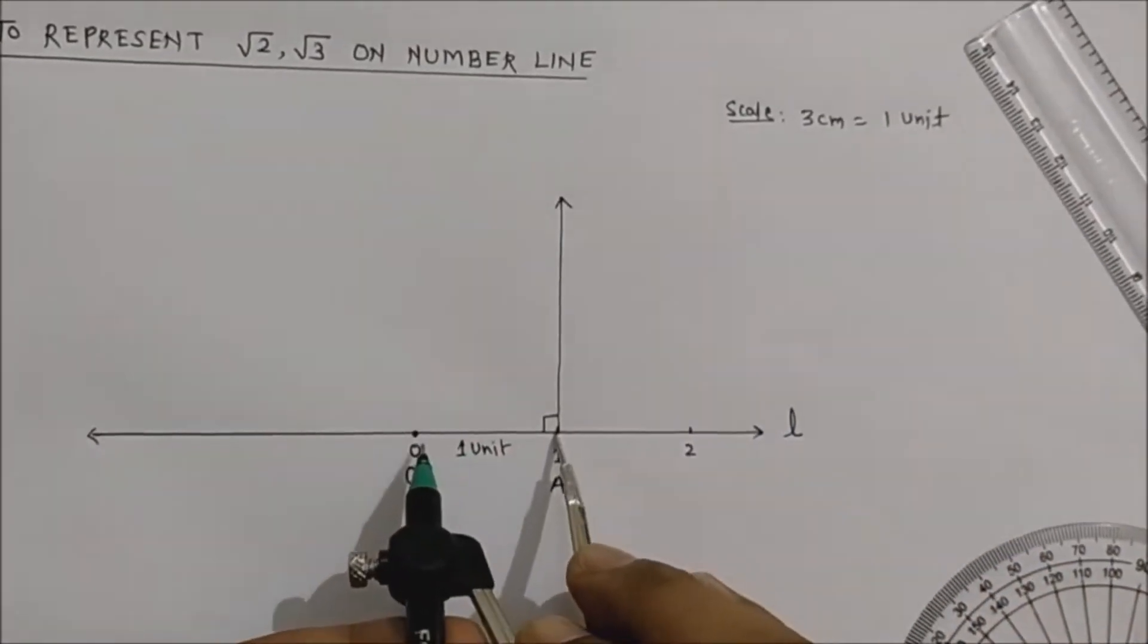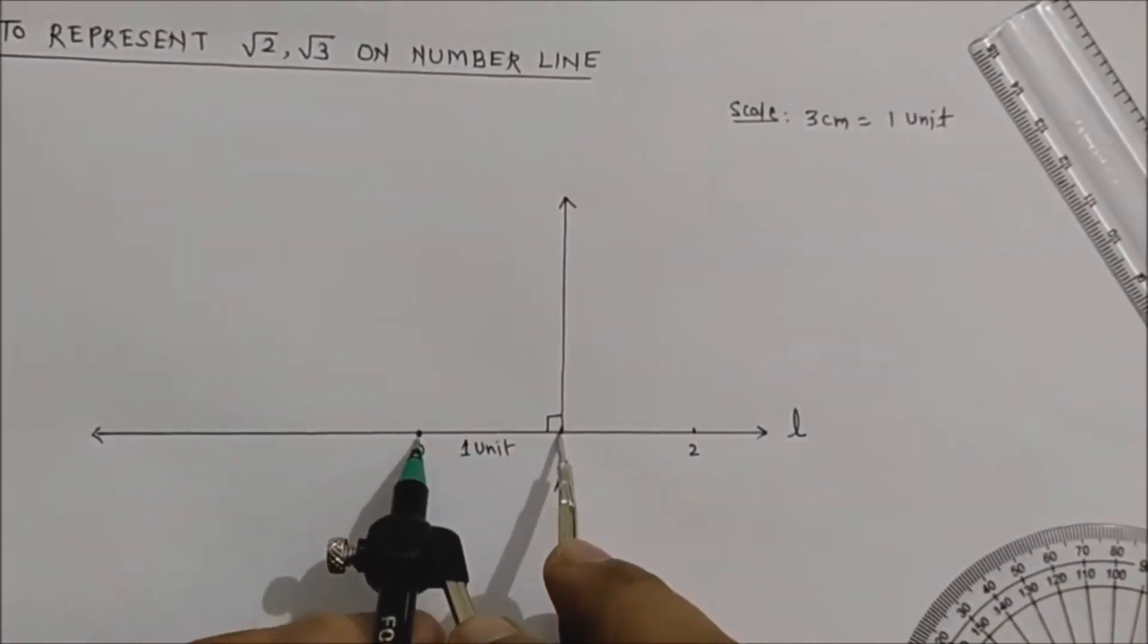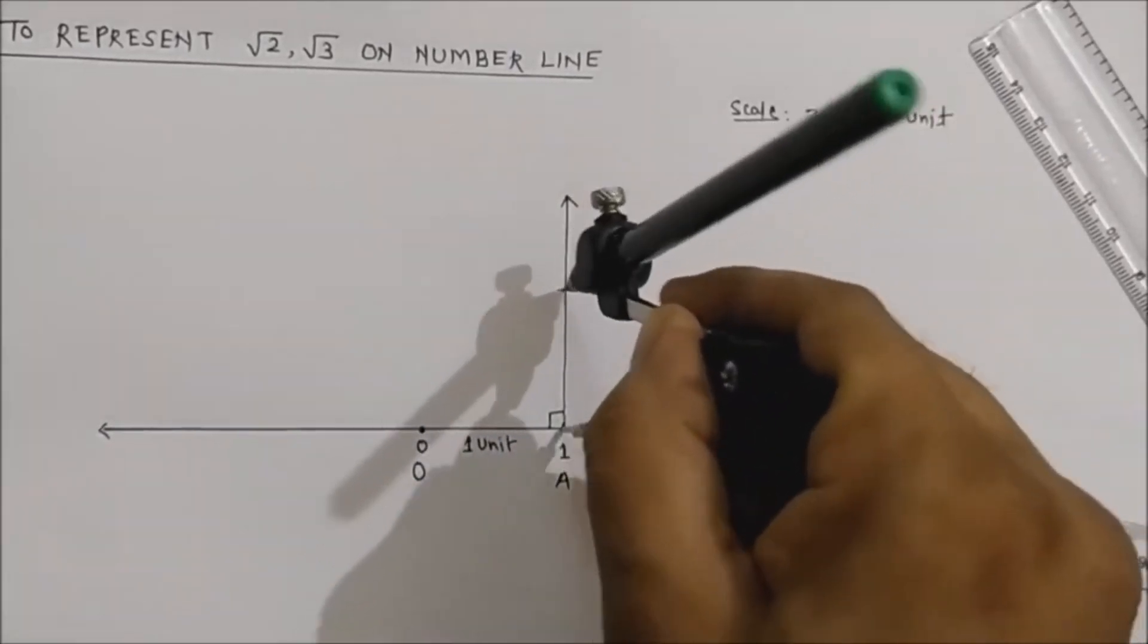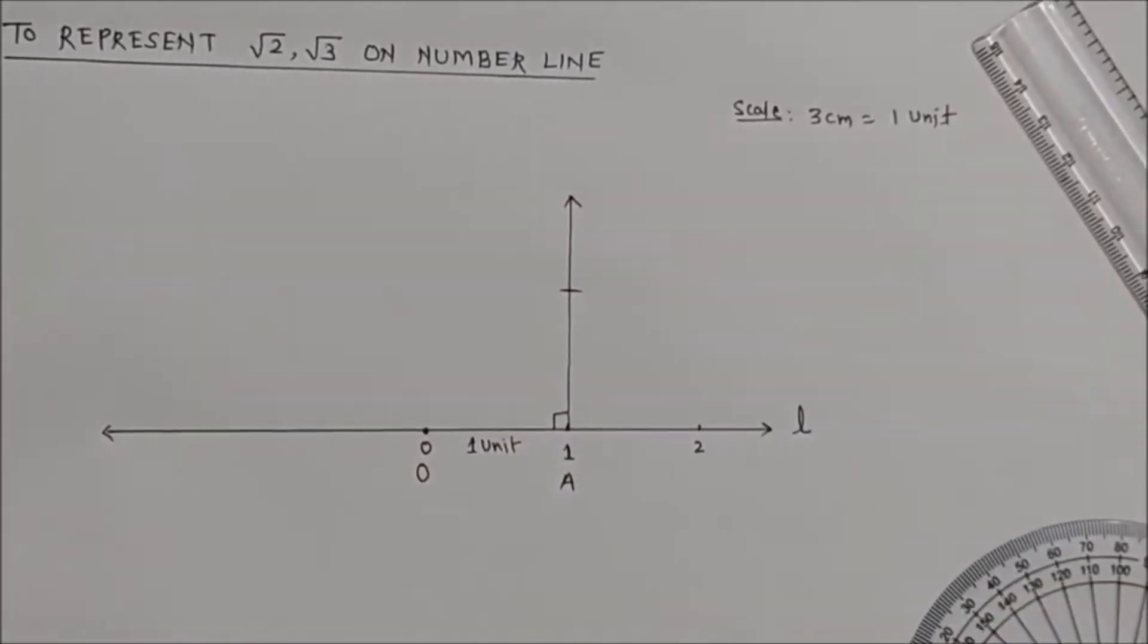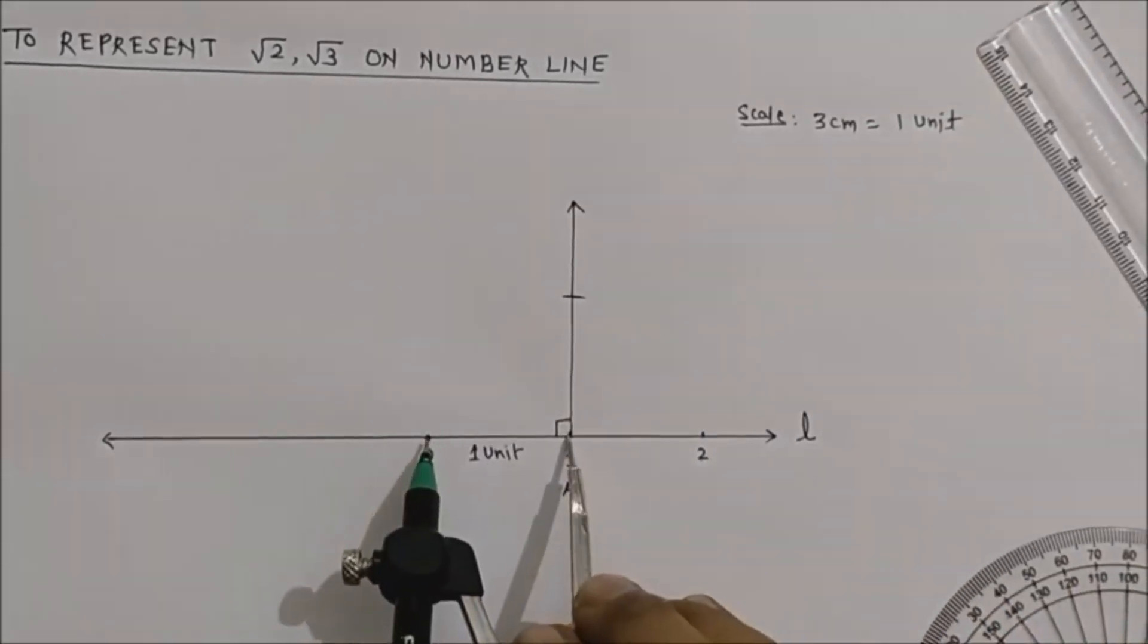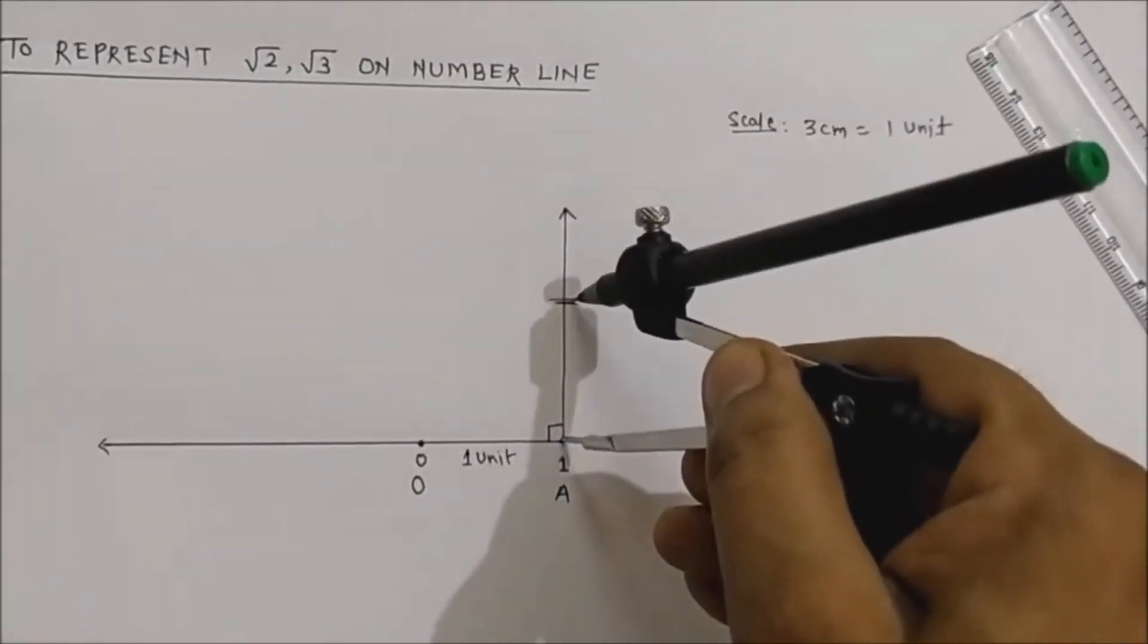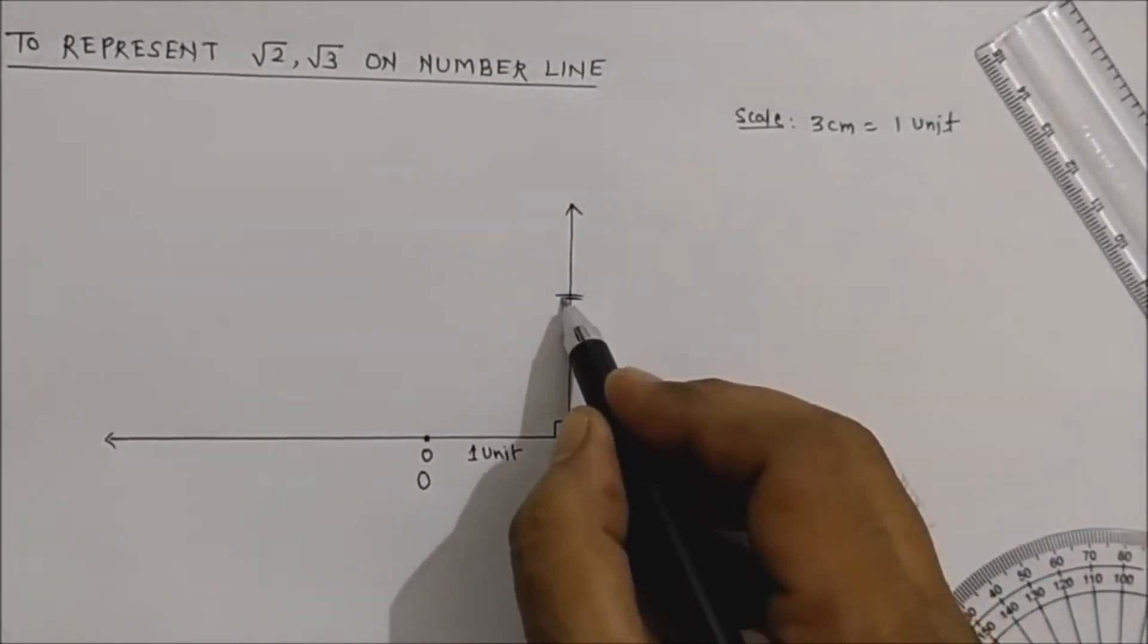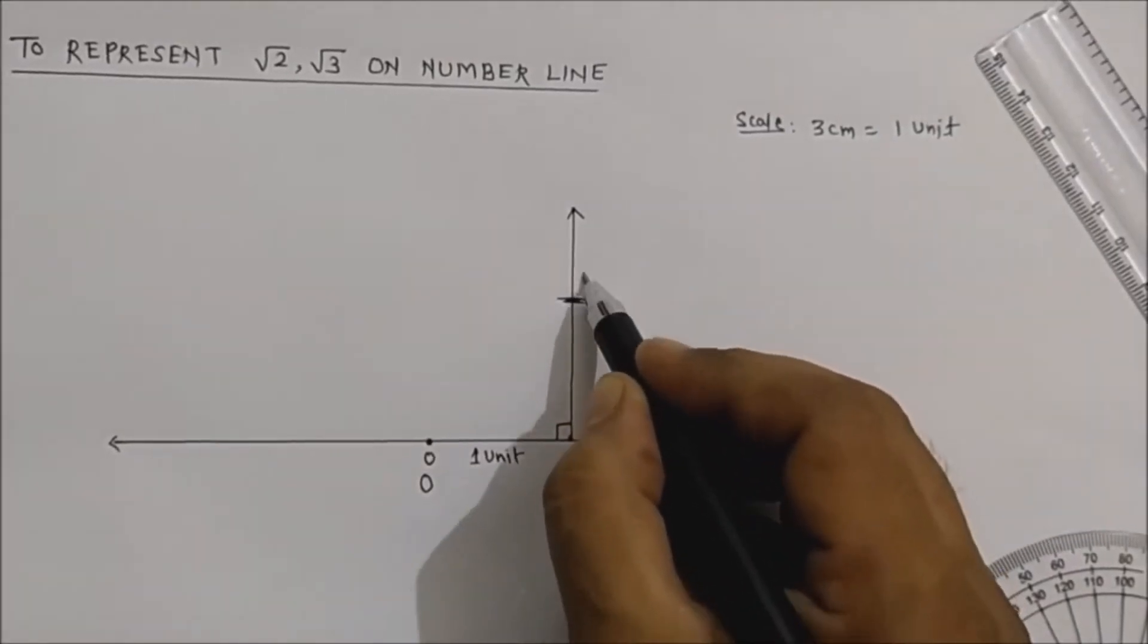Keep the compass on point A, take this distance, which is 3 centimeters, whatever you have taken, and cut an arc here. Now name this point as point B.